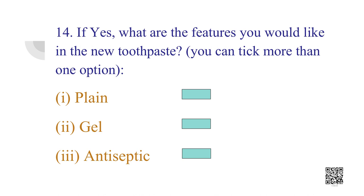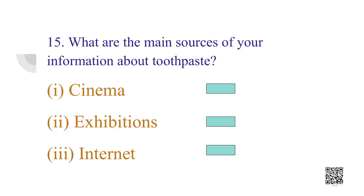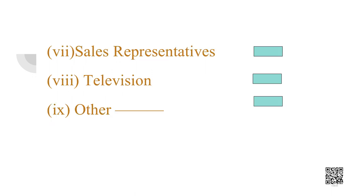The features for a new toothpaste might include: plain, gel, antiseptic, flavored, carries protection, fluorite, or others to be specified. We can also ask what was the main source of your information about the toothpaste you are currently using — options include advertisement in a cinema hall, advertisement in an exhibition, internet, magazine, newspaper, radio, a sales representative, television, or others to be specified.